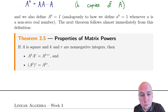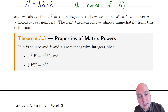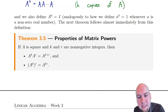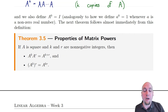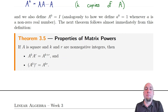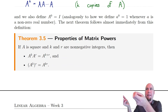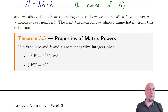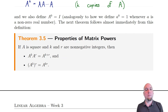Suppose you've got some square matrix and k and r are non-negative integers. Then A to the power k times A to the power r equals A to the power k plus r. This is just like our exponentiation rules for real numbers — the same thing holds when the base is a matrix. Similarly, A to the power k to the power r equals A to the power k times r. The proofs are immediate: k copies of A multiplied by r copies of A gives k plus r copies of A altogether.